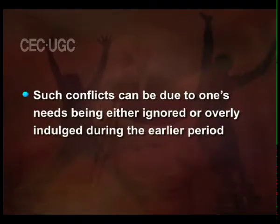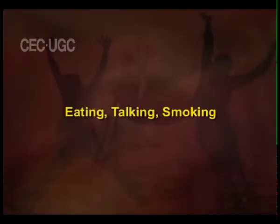Such conflicts can be due to one's needs being either ignored or overly indulged during the earlier period. For example, fixation might occur if an infant's oral needs were constantly and immediately satisfied at first signs of hunger. Fixation at this stage might produce an adult who is unusually interested in oral activities such as eating, talking and smoking.